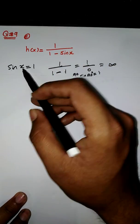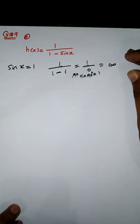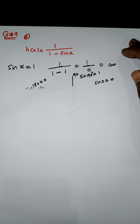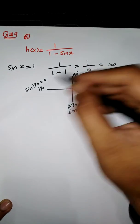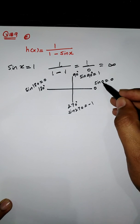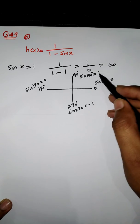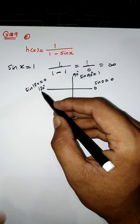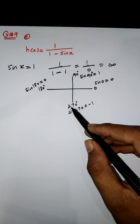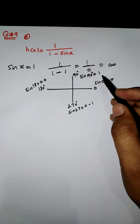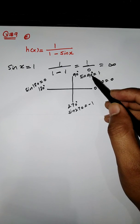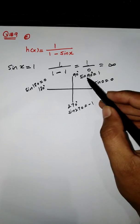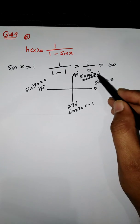We need to find for what values of x sin x equals 1. Using the unit circle: at 0° sin gives 0, at 90° sin gives 1, at 180° sin gives 0, and at 270° sin gives -1. So we cannot include the angle where sin equals 1 — that is, we cannot include 90°.